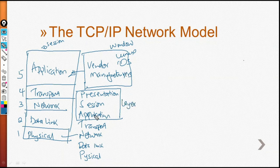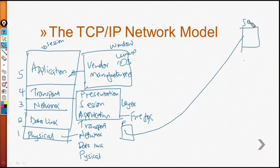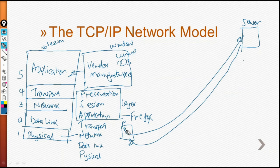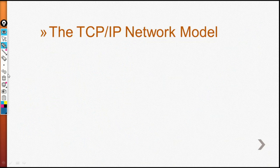For the application layer to function the way it does, there is the application itself — for example, a browser like Firefox. Then there is the session: when you access google.com, you open Firefox and create a session to the Google servers. This session is maintained, so you send a request and get a response. When you get a response, it is presented to you. So there is the application, which is Firefox; a session between your computer and the server; and a presentation layer that presents the information received from the server.